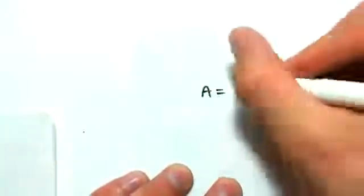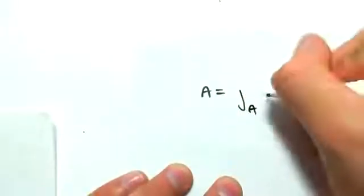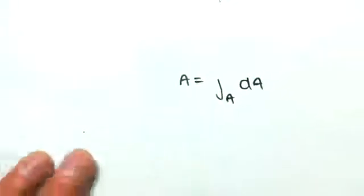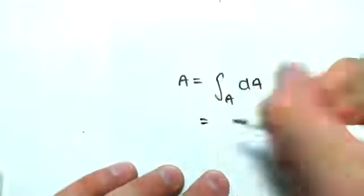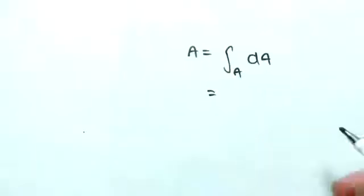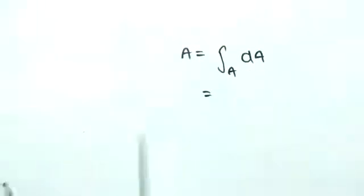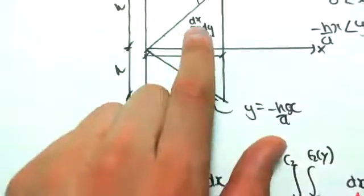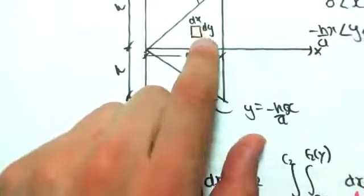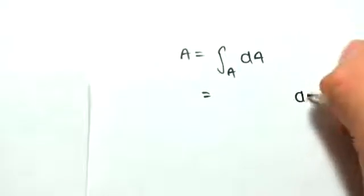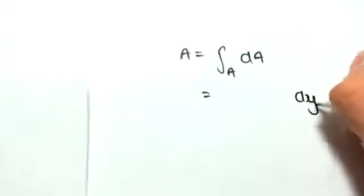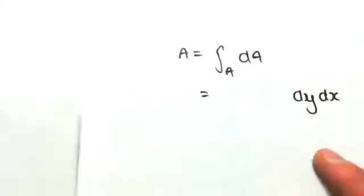So the first thing we're going to find is just the area. The area we know is the integral of dA over A, which in our case is going to be dA is dx and dy for our problem. That's the little area, the infinitesimally small area. It's dx by dy. So this now becomes dy by dx. As I said, we're going to be using this setup here.